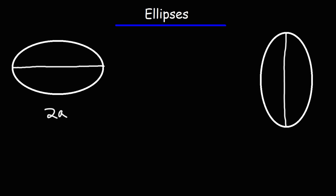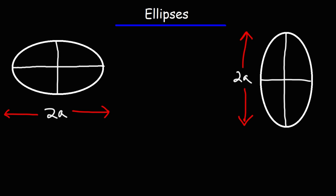The length of the major axis is always equal to 2a, and that's the case for both types of ellipses. The length of the minor axis — which is vertical on the left but horizontal on the right — is equal to 2b. For the ellipse on the right, the minor axis is horizontal but it's still equal to 2b.